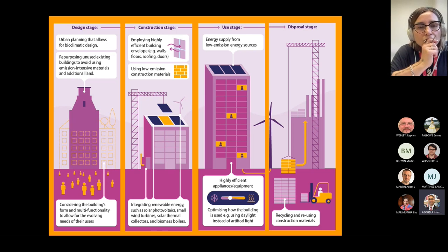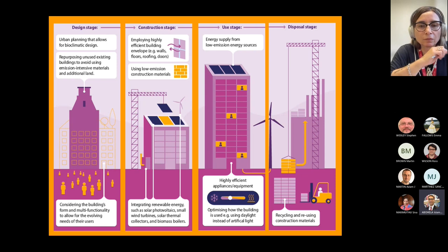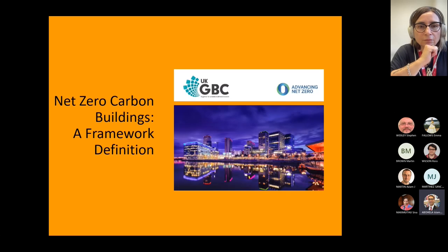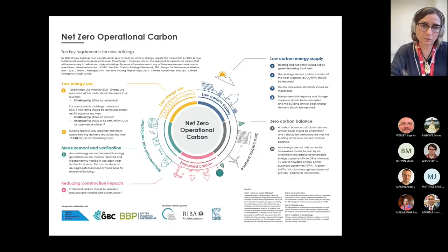Power is needed while we construct, operate, and dispose of our buildings. Currently we're depending on renewables — photovoltaics, wind turbines — in addition to conventional sources of energy. The objective is to depend more on renewable sources of energy and bring wind turbines into the built environment. According to the Green Building Council's publication 'Net Zero Carbon Buildings: A Framework Definition', there are 10 key requirements for new buildings to be net zero in operational carbon, two of which relate to energy use and how we supply power — specifically depending more on renewables such as wind turbines.